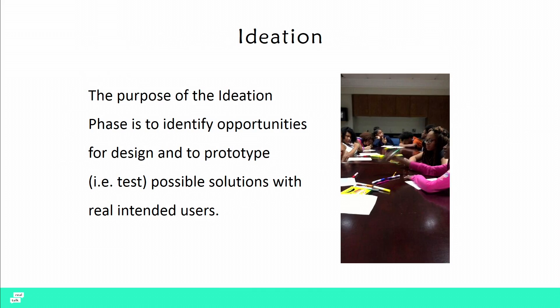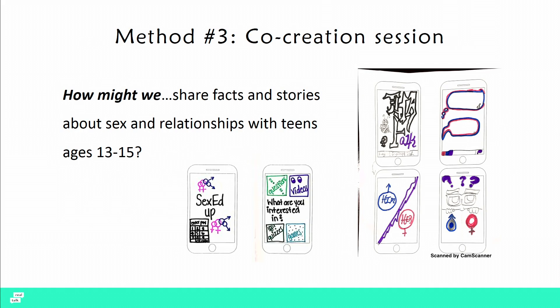Taking that info, we went into the second phase: ideation. The purpose of this phase is to identify opportunities to design and prototype or test possible solutions with the real intended users. We held a bunch of co-creation sessions where we brought teens together, gave them pens, pencils, markers, and blank iPhone screens, and posed questions like: how might we share facts and stories about sex and relationships with teens ages 13 to 15? We gave them time to work independently, draw out what they think, and then asked them to pitch their ideas to others in the room. We paid close attention to what they were saying and how they were pitching it, because that was really informative for what teens really wanted and how they would market the app to their peers.